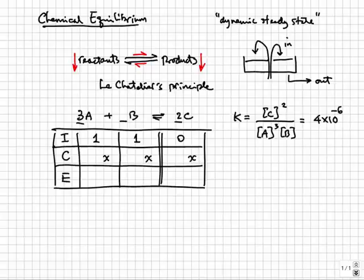Since there is no C initially, the reaction will have to move to the right in order to reach equilibrium, so the changes of the reactant side are all negative, and the changes on the product side are all positive. If the reaction moves to the right, every time 3 A's are used, you will need 1 B to go with it, and 2 C's will appear on the product side.